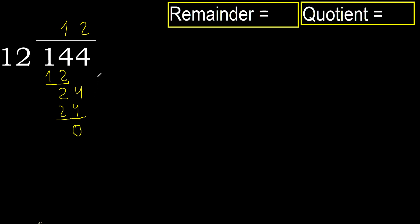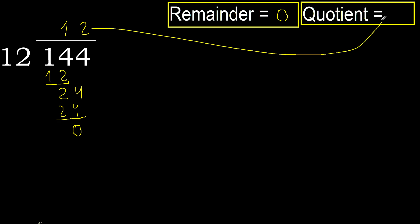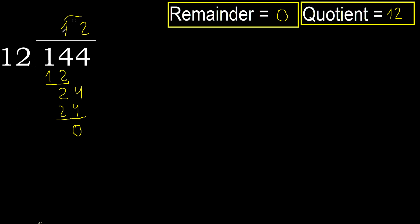Next — there is no next number, therefore finish it. 144 divided by 12 is 12.